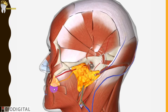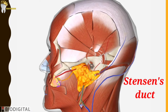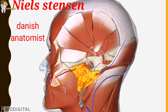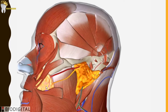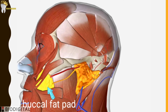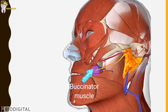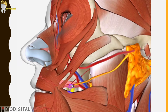Another structure coming from the parotid gland is the parotid duct, also known as Stenson's duct, named after Niels Stenson, an eminent Danish anatomist. The Stenson's duct is 5 cm long and 3 mm wide, but the width is less at the opening of the duct in the mouth. The duct appears at the anterior border of the upper part of the gland and passes horizontally across the masseter muscle parallel to the zygomatic arch. It then turns medially at the anterior border of the masseter at almost right angles, passes through the buccal fat pad and buccinator, and opens on a small papilla opposite the maxillary second molar.